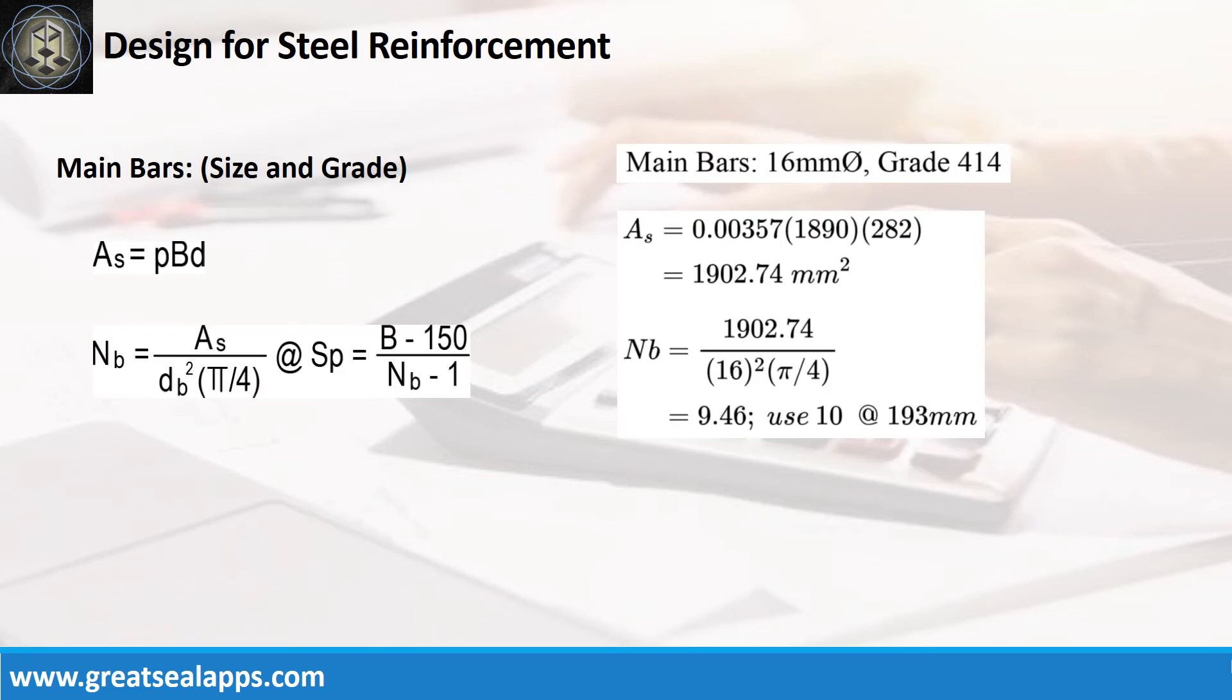Given rho equals 0.00357, B equals 1,890 mm, and D equals 282 mm, the area of steel for main bars is 1,902.74 mm², and the number of bars for 16 mm bar is 10.